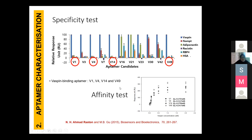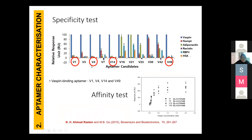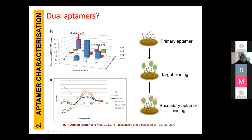We then proceeded with these four aptamer candidates to check the affinity — the KD value — to see how strong the aptamer-target binding is. Since I had four different aptamer sequences that can bind to one single target, I checked whether they could work as dual aptamers using SPR: first primary aptamer, then target, then second aptamer. If I got a signal from the SPR reading, it means the combination works. I also used CD spectrum to confirm whether dual binding occurred — from the CD spectrum, the pattern changed upon addition of the second aptamer, confirming that dual aptamers can bind to different sites on the protein.